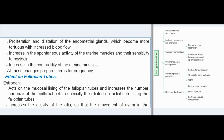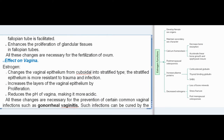Effect on fallopian tubes: estrogen acts on the mucosal lining of the fallopian tubes, increasing the number and size of epithelial cells, especially the ciliated epithelial cells. It increases the activity of the cilia so that the movement of the ovum in the fallopian tube is facilitated, and enhances proliferation of glandular tissues — all necessary for fertilization of the ovum. Effect on vagina: estrogen changes the vaginal epithelium from cuboidal into stratified type, which is more resistant to trauma and infection. It increases the layers of vaginal epithelium by proliferation and reduces the pH of vagina, making it more acidic — necessary for prevention of common vaginal infections such as gonorrheal vaginitis.